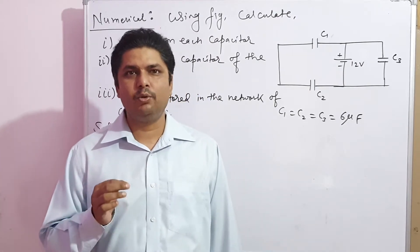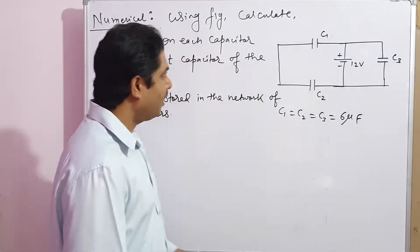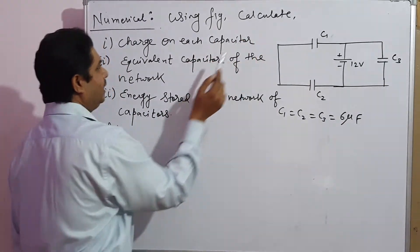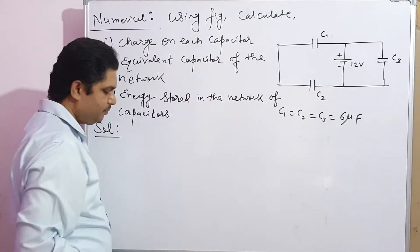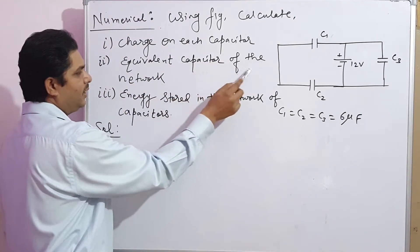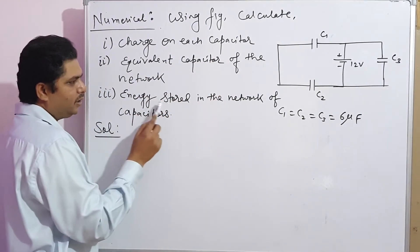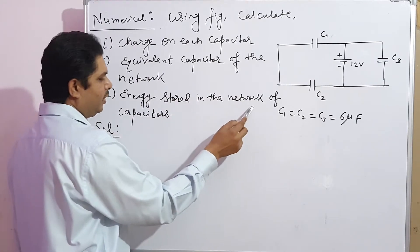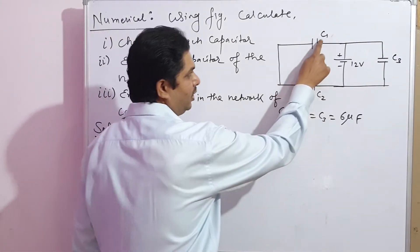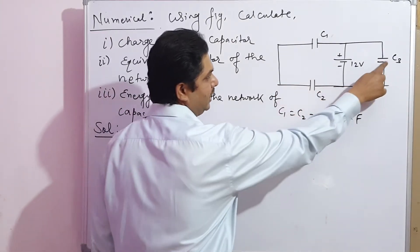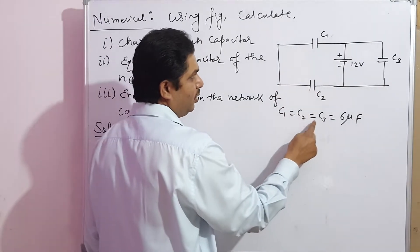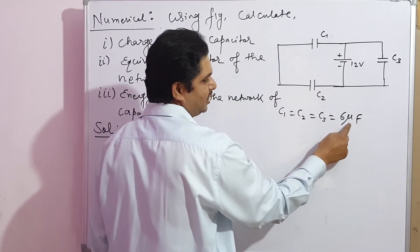Now dear students, let us see a numerical based on this. The question says: using the figure, calculate the charge on each capacitor, the equivalent capacitance of the network, and the energy stored in the network. In the figure, we have capacitors C1, C2, and C3, and it is given that C1 equals C2 equals C3 equals 6 microfarad.